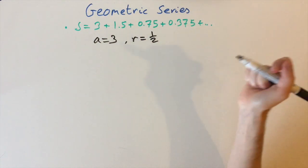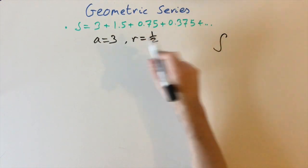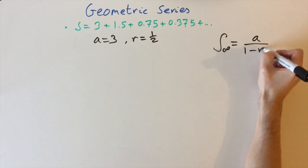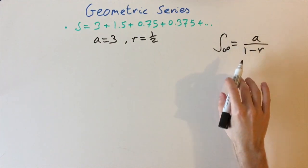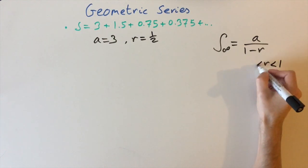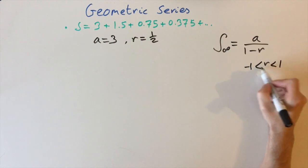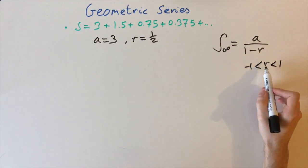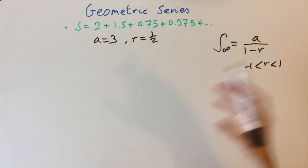There's a general formula: given initial term a and ratio r, the sum to infinity S∞ equals a over (1 minus r). I have another video deriving that — here we'll just use the formula. Importantly, this formula is only valid when r is strictly between -1 and 1, i.e., the absolute value of r must be strictly less than 1. If r is outside this range, the series won't converge — the terms keep getting bigger and bigger, so the sum diverges to infinity.